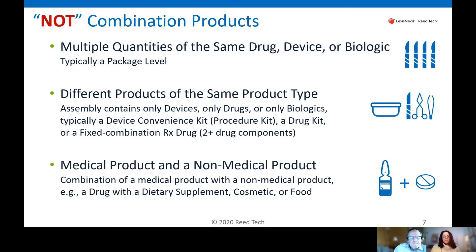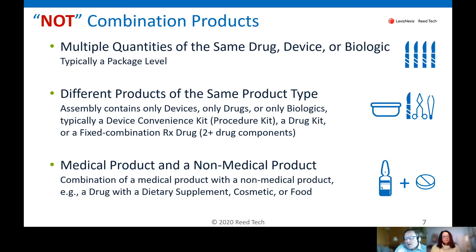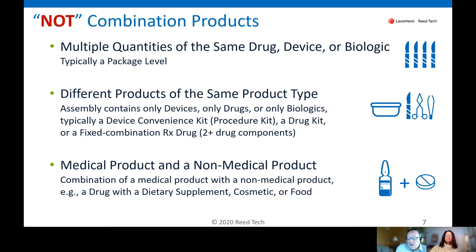It's just as important to understand what is not a combination product. If you have different products of the same product type — for example, all medical devices — this might resemble a convenience kit or combination kit, but if only devices are present and no drugs, this would be a device convenience kit. Drug-only kits also exist. The other example is where a medical product is combined with a non-medical product, such as a drug combined with a dietary supplement, a cosmetic, or even a food.